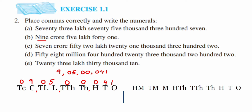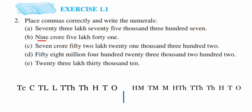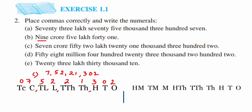Problem C: seven crore fifty-two lakh twenty-one thousand three hundred two. Seven crore is a single digit, so we write 07 or simply 7. Then fifty-two lakh gives us 5 and 2. Twenty-one thousand gives us 2 and 1. Three hundred two gives us 3-0-2. Written with commas, the answer is 7,52,21,302.